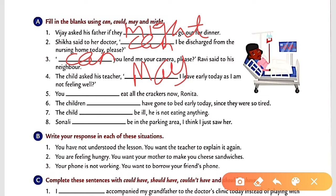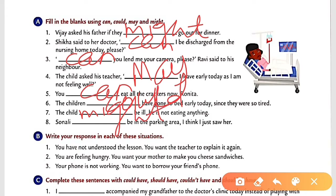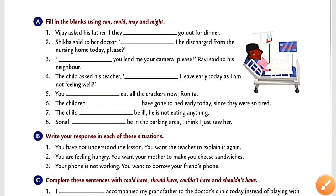Number five: Ronita can eat all the crackers — ability, so 'can'. Number six: The children could have gone to bed early today since they were so tired — so 'could'. Number seven: The child might be ill as he is not eating anything — so 'might'. Number eight: Sonali could be in the parking area; I think I just saw her — possibility, so 'could'.